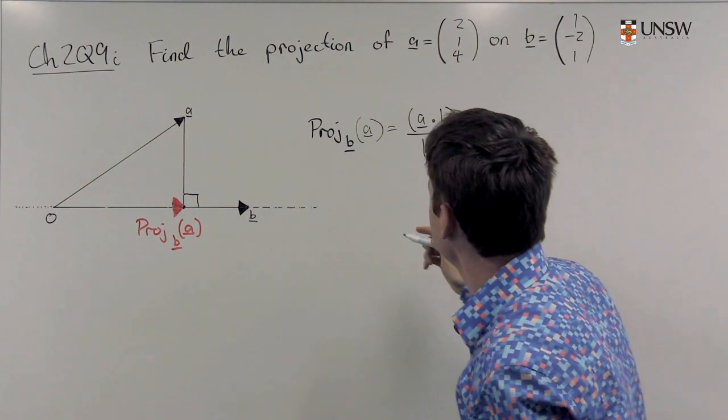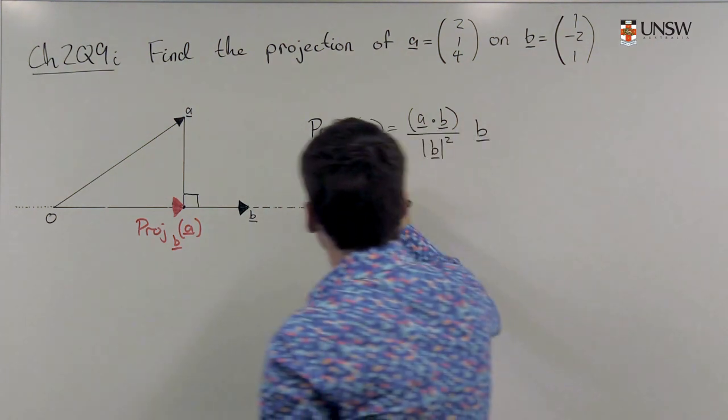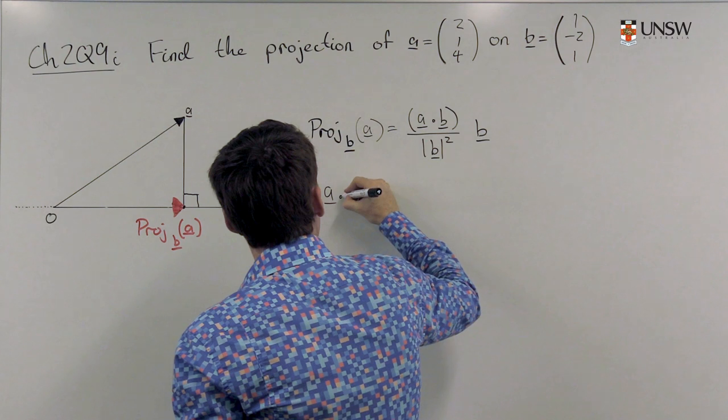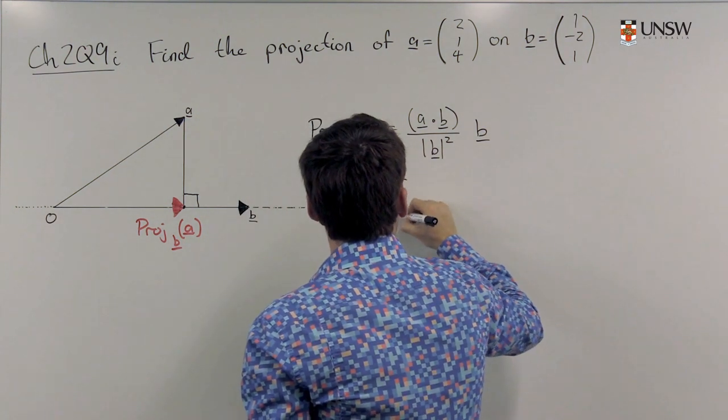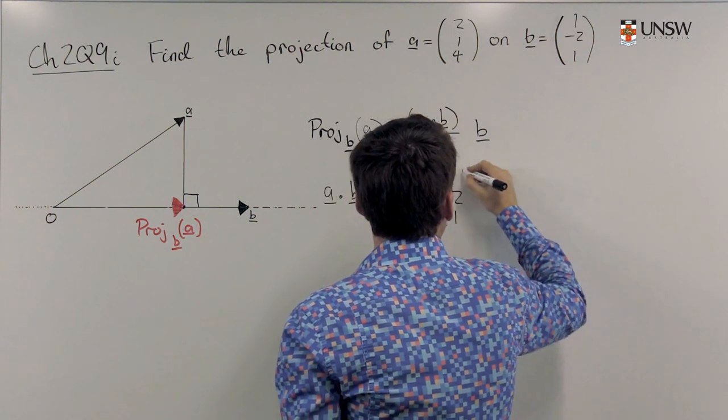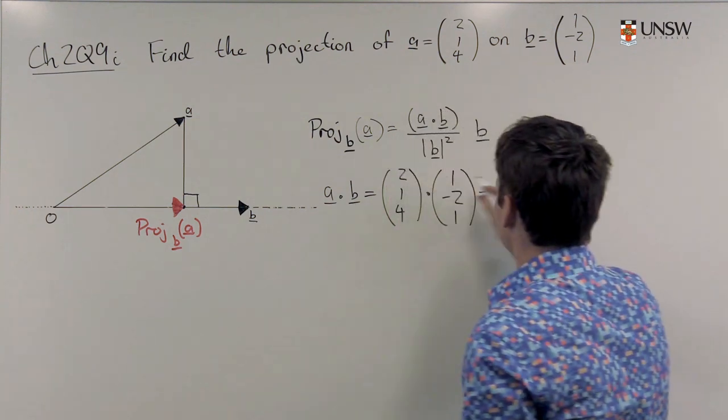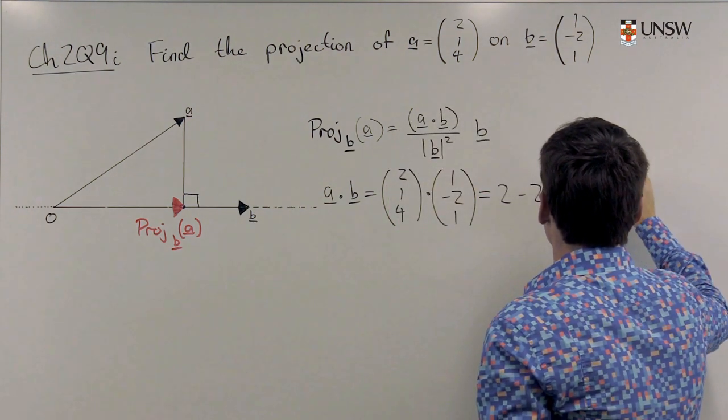Well, we need two things: a dot b and ||b||². a dot b equals (2, 1, 4) dot (1, -2, 1), which equals 2 minus 2 plus 4, which is 4.